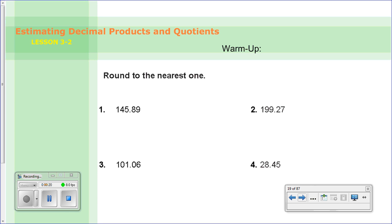So what we have here for this warm-up is rounding and this goes back to the last lesson we did where we had to round to the nearest whole number. That's what you're going to do for number 1, 2, 3 and 4 here. You're going to round to the nearest whole.